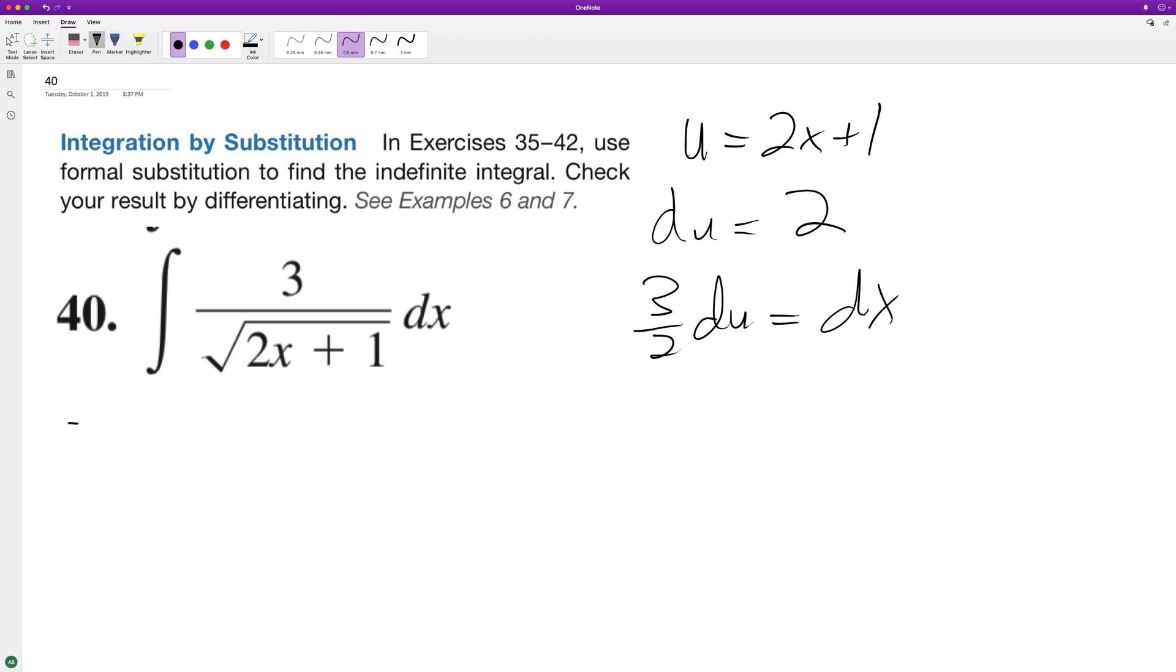All right, so we can go and integrate. So 3 halves of u raised to the negative 1 half because that's 1 over the square root of that quantity du.